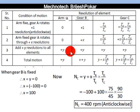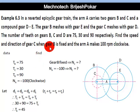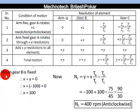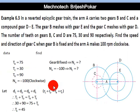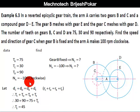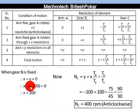Given that gear B is fixed, the total motion of gear B equals zero: x + y = 0. Since arm A makes 100 rpm clockwise, y = -100. Therefore, from x + y = 0, we get x = 100.